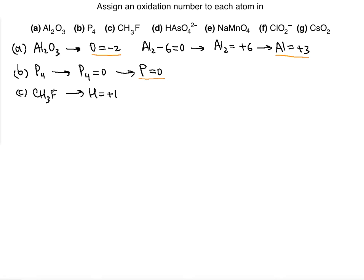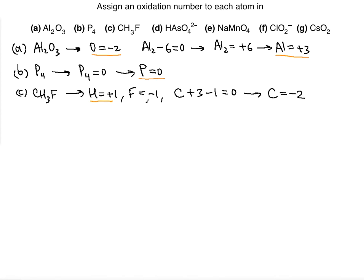The next rule applies to fluorine — fluorine's oxidation number is negative 1. So we set up: C plus 3 times the hydrogen (plus 3, because there are 3 atoms) plus minus 1 for fluorine equals the overall charge of zero. Solving directly for C: 3 minus 1 is 2, then subtracting 2 on both sides gives carbon an oxidation number of minus 2. Those are the oxidation numbers for every atom in CH₃F.